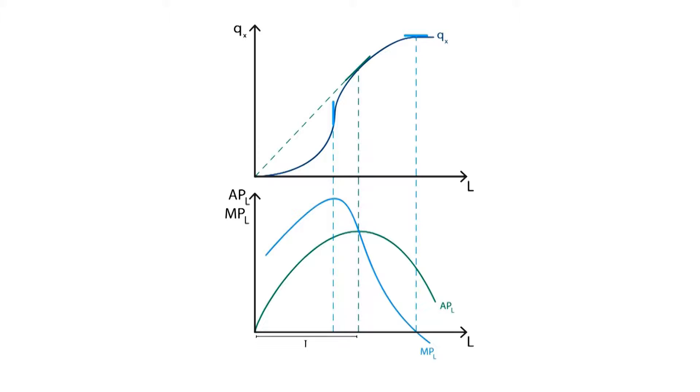In Phase 1, average productivity increases with each additional unit, corresponding to the diagram up to the point of inflection. Here, marginal productivity is always greater than average productivity. At the optimum level, marginal and average productivity coincide.